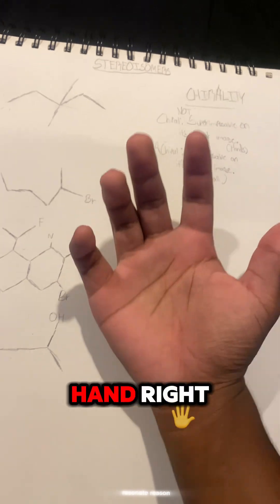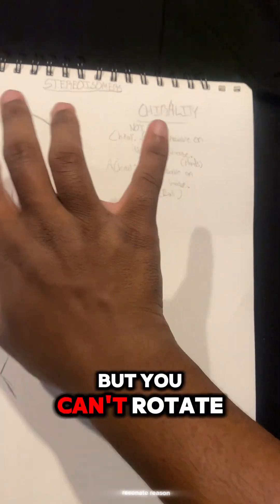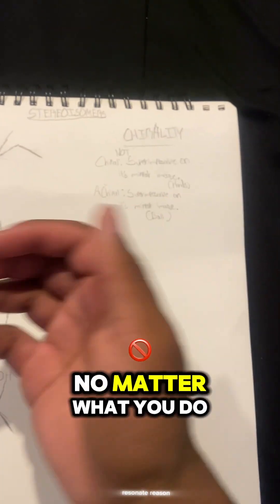So think of your left and your right hand. It has the same shape, same structure, but you can't rotate one to perfectly match the other no matter what you do.